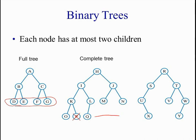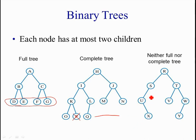The third type of binary tree is just neither full nor complete — so just a normal binary tree. It's not a full tree because here we don't have always two children for each node, and the leaves can be at different levels. For example, node V here is a leaf but it's not in the last level.